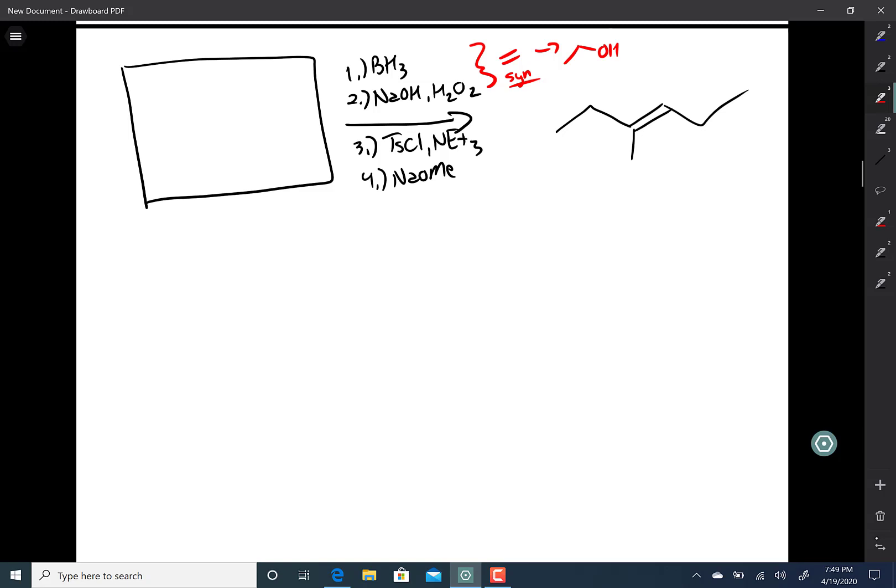Tosyl chloride changes alcohols into good leaving groups OTs. And sodium methoxide, well that's a base and it can give E2 reactions. We know it's going to give an E2 reaction because we have a tosylate here and our product is an alkene. That highly suggests an E2. So the reaction going from here to here, sodium methoxide, it's an E2 reaction.